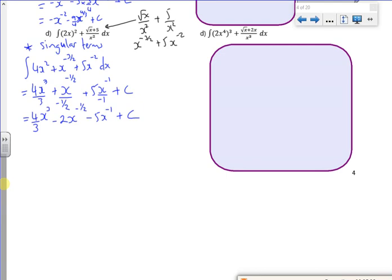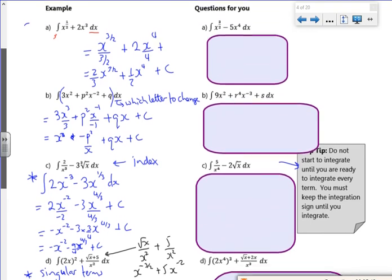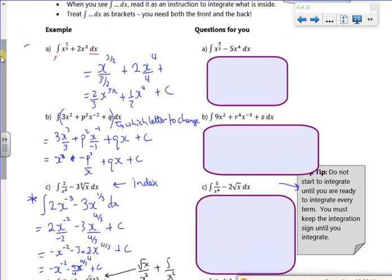So I get 4 thirds x cubed, minus 2x to the minus 1, minus 5x to the minus 1 plus c. With all those ones at the side there for you to have a go at. So if you've done those ones on the questions for you, then you try.